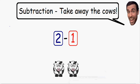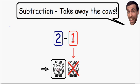Let's solve this example by taking away the cows. Here we have two minus one, or two is being subtracted by one. So we're starting with two cows and we are subtracting one, which means we are taking away one cow. So if we start with two and we take away one cow, how many cows do we have left over? Well we have one cow left over. So two minus one is equal to one.